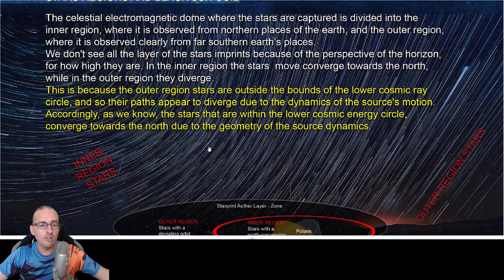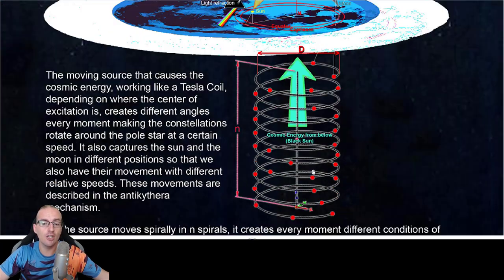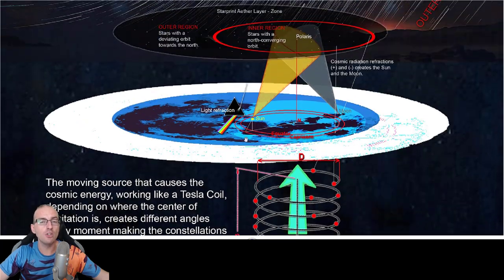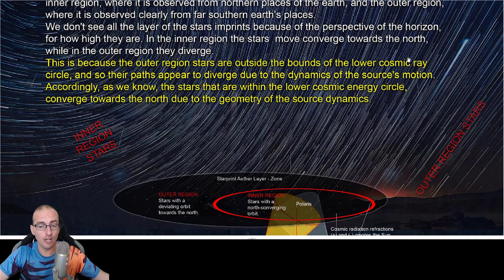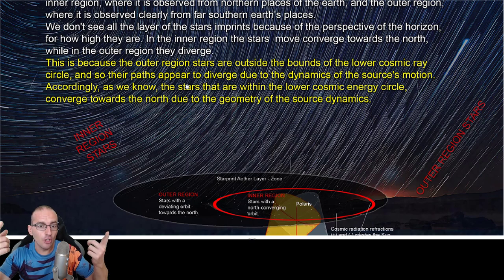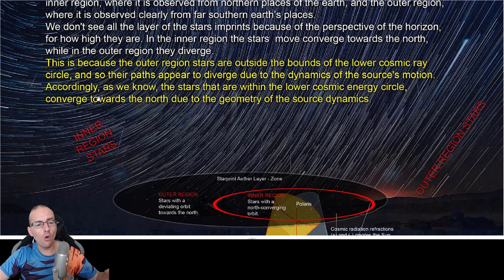This is because the outer region stars are outside the bounds of the lower cosmic ray circle, or call it the electromagnetic energy of the black sun which is underneath the earth. The outer region stars are outside the bounds of this electromagnetic energy and so their paths appear to diverge due to the dynamics of the source's motion. It is a dynamic electromagnetic field all the time. Accordingly, the stars that are within the lower energy circle converge towards the north due to the geometry of the source dynamics.